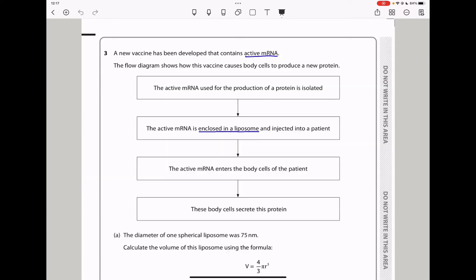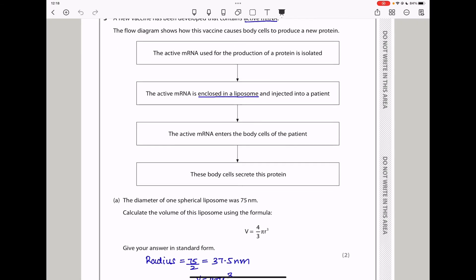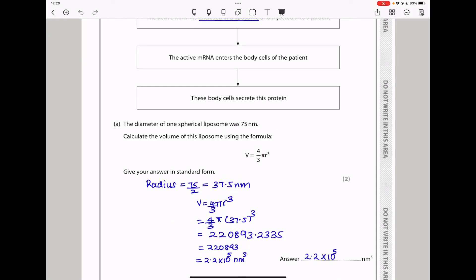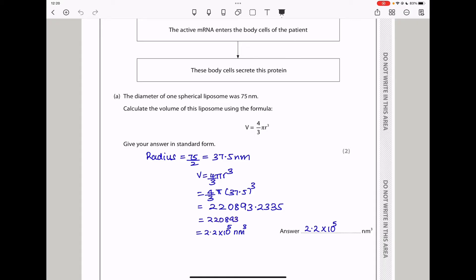Question three. A new vaccine has been developed that contains active messenger RNA. The flow diagram shows how this vaccine causes body cells to produce a new protein. The active messenger RNA used for the production of a protein is isolated, and then the active messenger RNA is enclosed in a liposome and injected into a patient. Part A says, the diameter of one spherical liposome was 75 nanometers. They wanted to calculate the volume of this liposome using the formula, volume is 4 over 3 times pi r cubed. Now we know from here that this is the diameter, and therefore the radius should be half of that, which comes out to be 37.5 nanometers. So substituting this here, volume will be 4 over 3 times pi times the radius cubed. The answer I got was 220893, but they require us to write it in standard form. So my answer was 2.2 times 10 power 5 nanometer cubed.